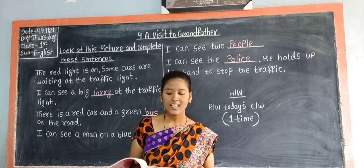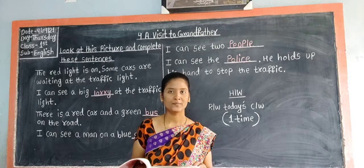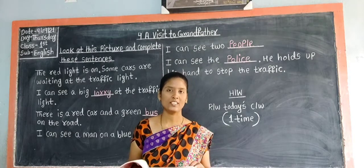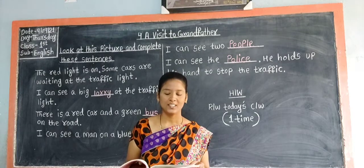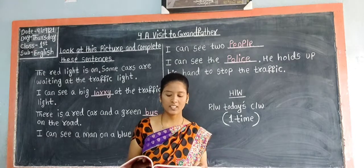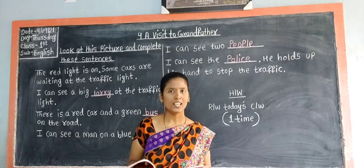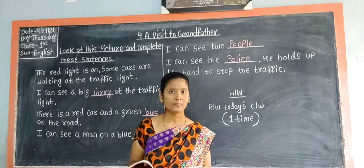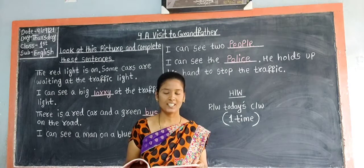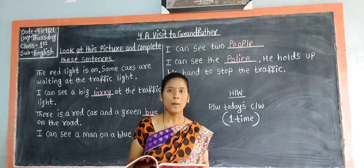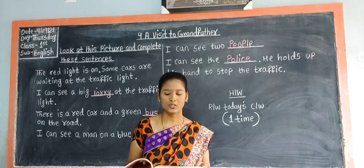Turn the page and open page number 36. What you can see in the third picture children? Very good — a girl is planting a plant. The sentence given is: 'Plant trees.' Is it good for nature? Yes, it is. We should plant trees. So put a tick next to the sentence.